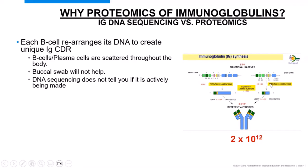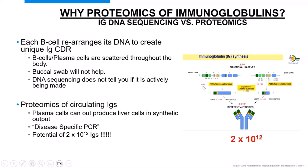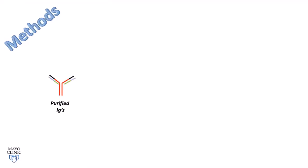Proteomics is really powerful here because plasma cells can outproduce even liver cells at making immunoglobulins. I coined the term 'disease-specific PCR' — plasma cells respond to something and you can look at what they're responding to by examining the repertoire in serum. But 2×10^12 combinations is like looking for a needle in a haystack.